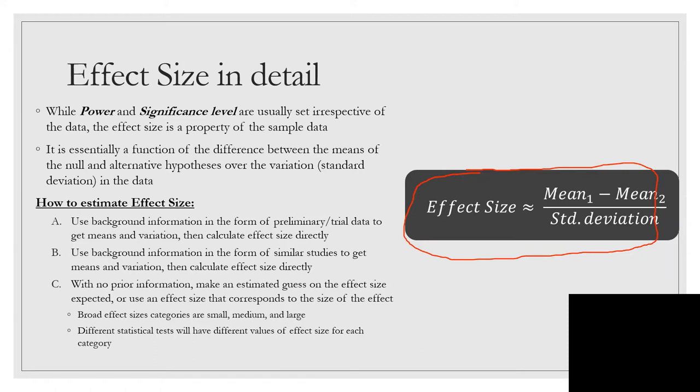We can estimate effect size three different ways. The first two are very similar, using other information. Background information in either the form of preliminary data, trial data, you can get things like your means and variation, you can get sample size. You also use information from similar or parallel studies to get means and variation.